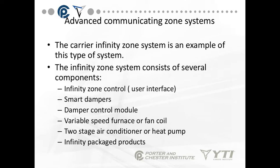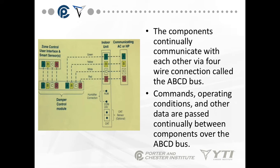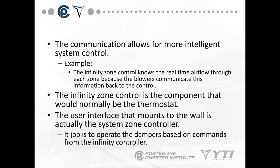Now, advanced communicating zone systems. An example of this is the Carrier Infinity Zone system. The Infinity Zone system consists of several components: the zone control (which is a user interface), smart dampers, damper control modules, a variable speed furnace or fan coil, a two-stage air conditioner or heat pump, and Infinity Package products. The components continually communicate with each other via a four-wire connection called the ABCD bus. Commands, operating conditions, and other data are passed continually between the components over the bus — every part of the system is talking to each other.